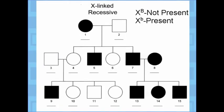Here we have an X-linked recessive pedigree. If it is recessive, they display the disease or trait. This shaded female is XX, and since she has the disease and the trait is recessive, she's going to be X little b, X little b. This unshaded male is XY, and since the trait is not present, he has to have a capital B on his X chromosome. All shaded males are XY with little b — recessive — since they display the trait.